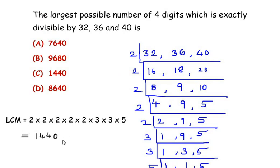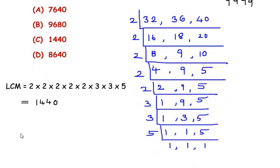For that, we are going to find out the multiple of 1440 which is less than our 9999, because this was the largest number. So let us find out that first. Here we have 1440. Let us multiply it with 5 and check how much we get. So here we get the value as 7200.